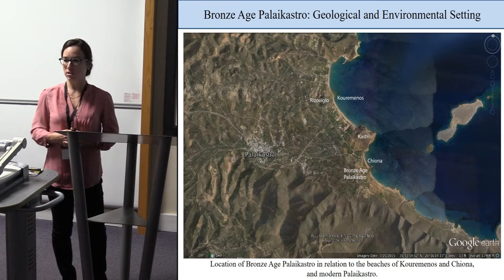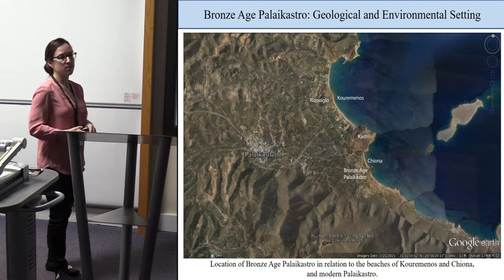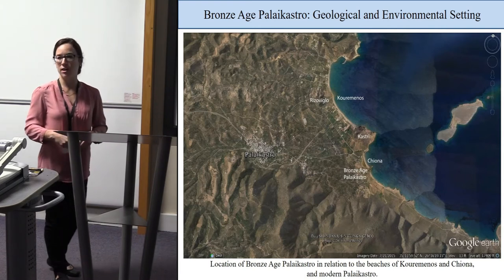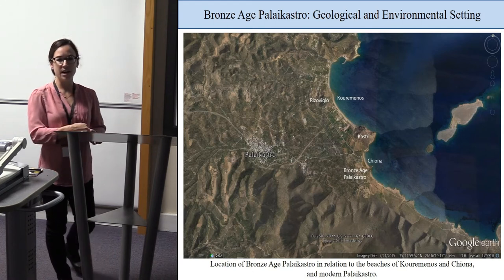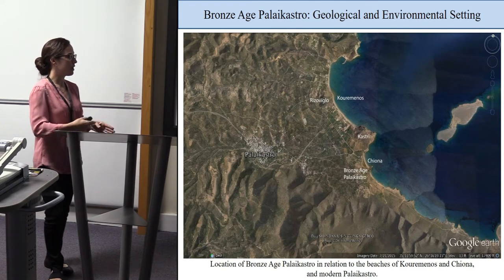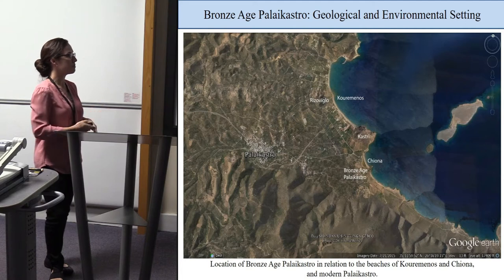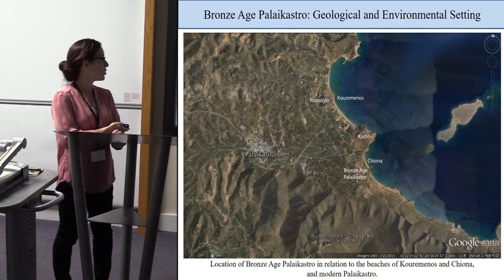The Palakastro basin is approximately 30 square kilometers, bordered by hill ranges and to the east by the Aegean Sea. Bronze Age Palakastro is a coastal site, and the large beach strand here is approximately 2.5 geodesic kilometers, divided into Coromenos and Hyona to the south. These are separated by Kastri, a trapezoidal conical cone eroding toward the sea to the east and contributing colluvially to basin sedimentation. Riso Viglo, another small mound, also contributes to sedimentation.